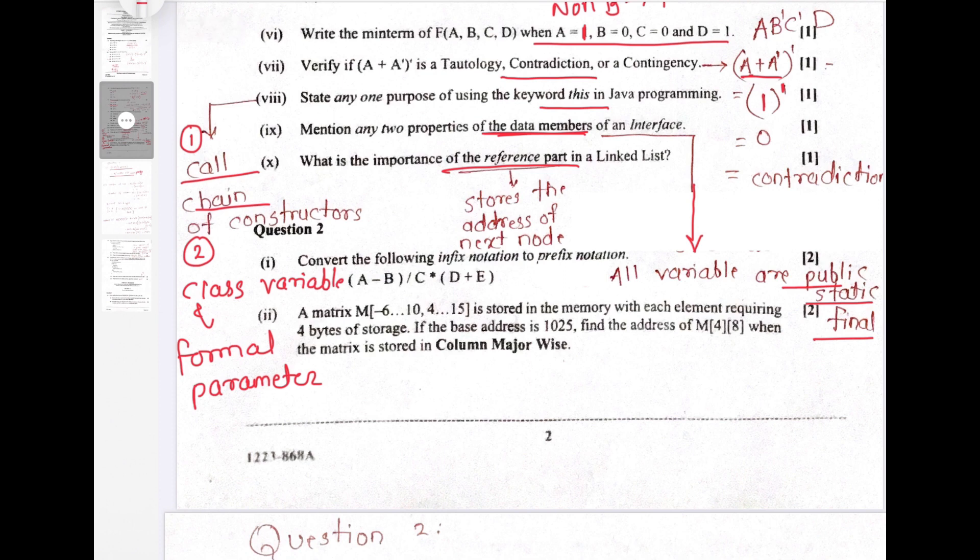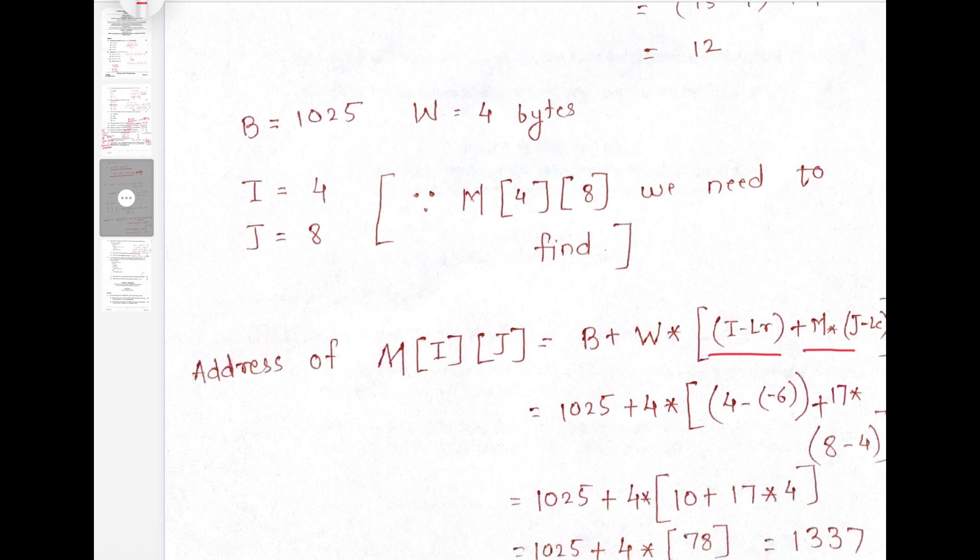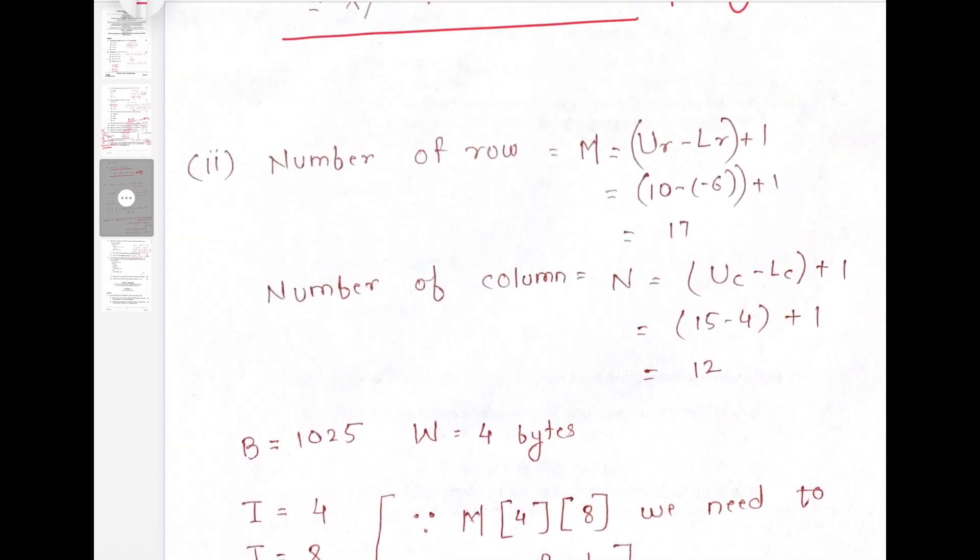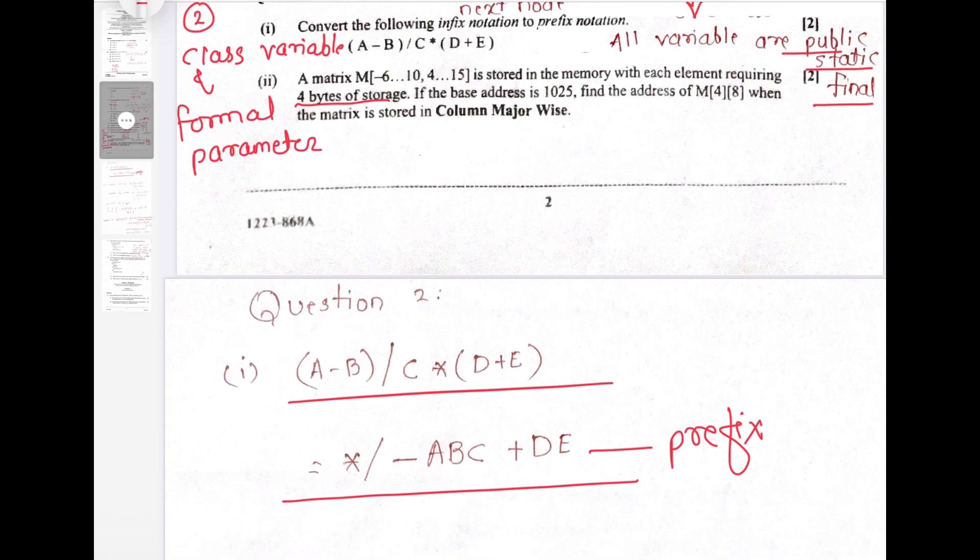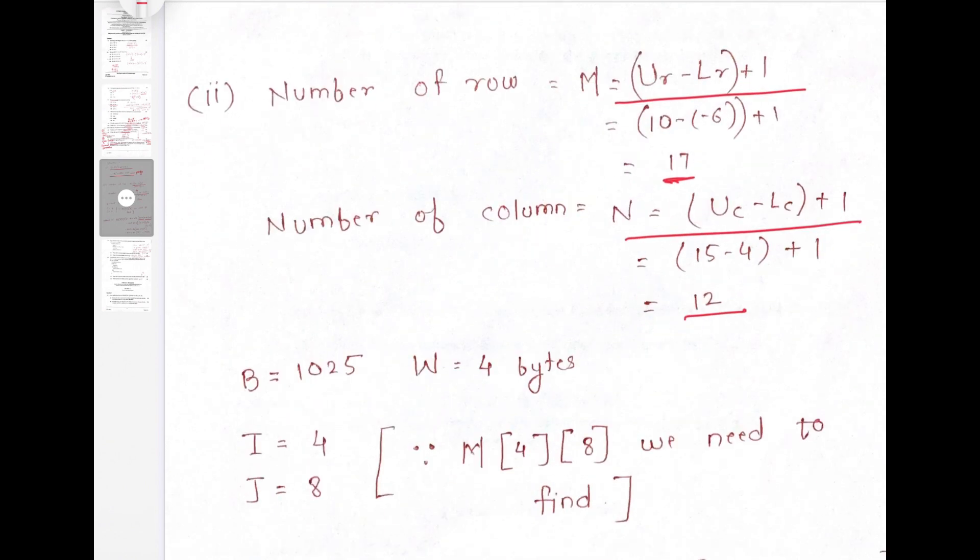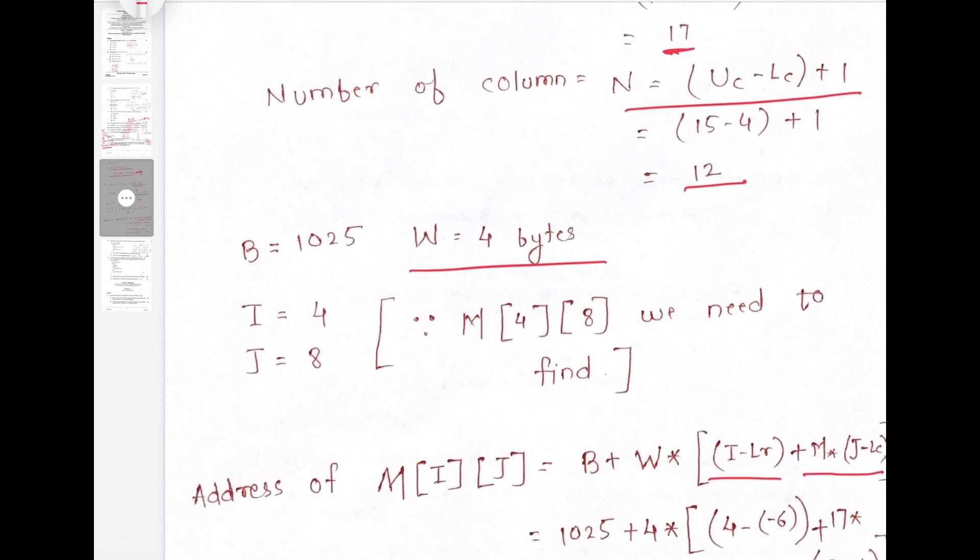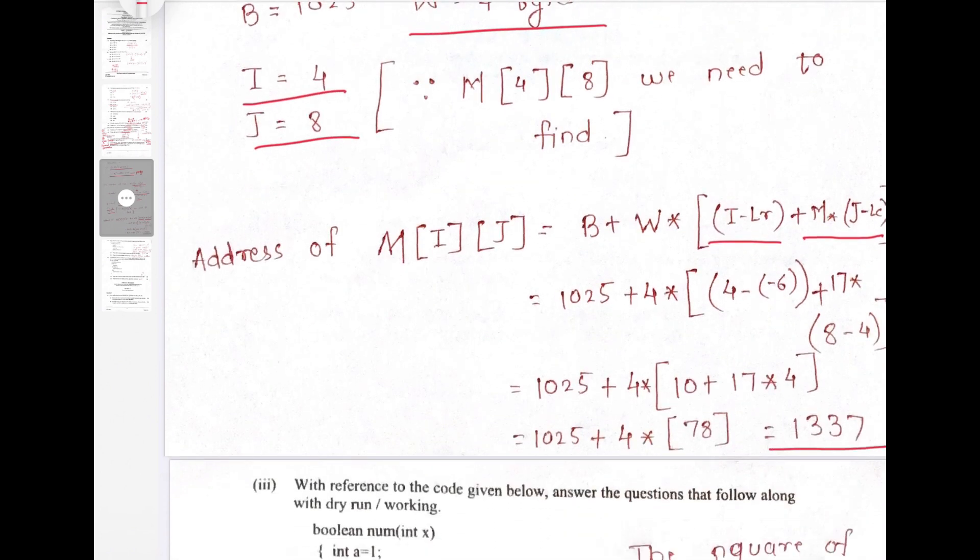A matrix is stored in a memory. Each requires four byte of storage. Now we know the formula. If column major is there, then the formula is B plus W into I minus LR plus M into J minus LC. From the question, lower LR is this and upper limit is this. Lower column and upper column is given. Now we calculate M using the formula, we will get 17. Number of columns is 12. Base address given is 1025 and W is 4 byte. Value of I and J are the address of particular location which we want to calculate. So using the formula when I solve, the answer will be 1337.